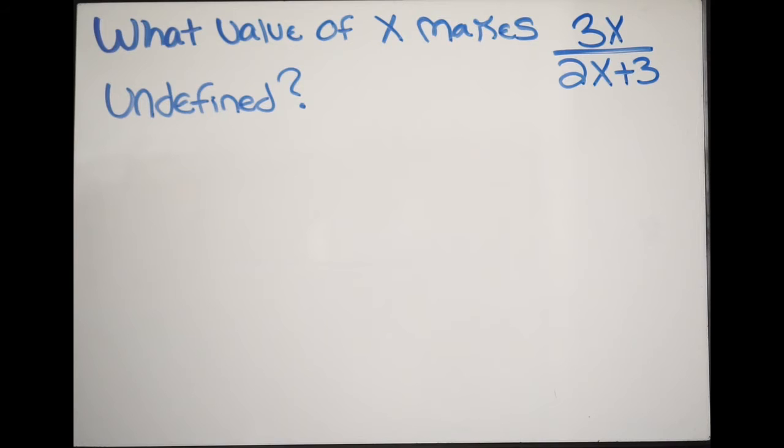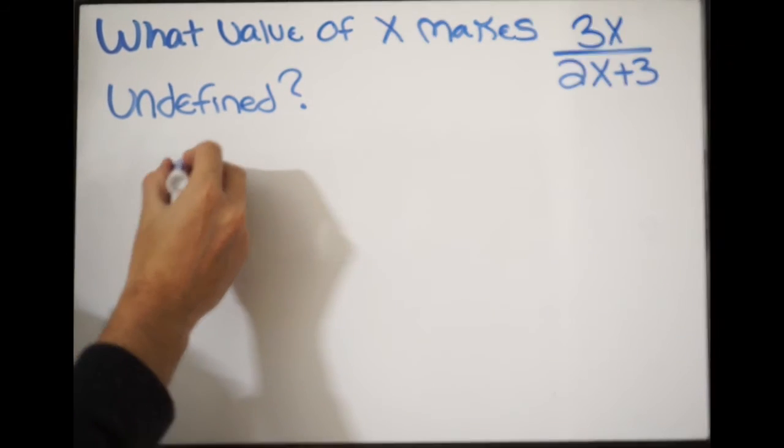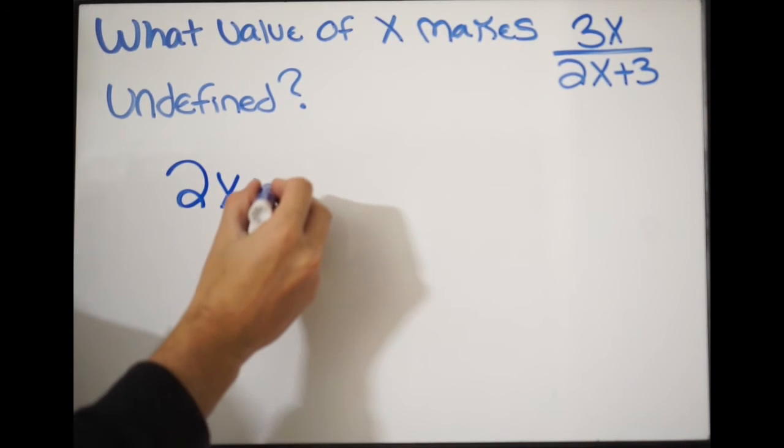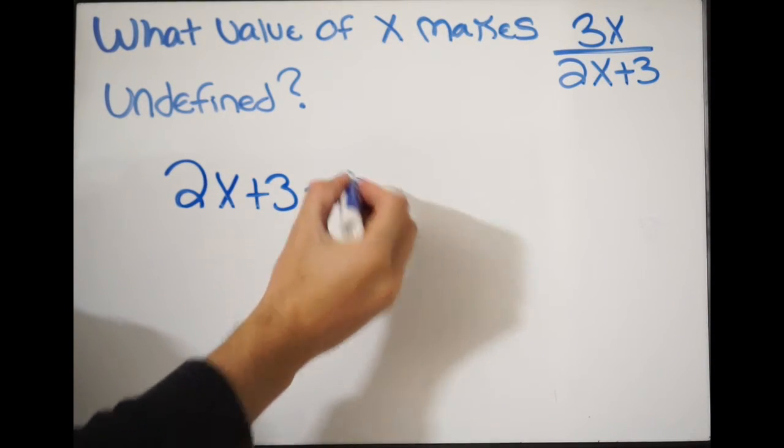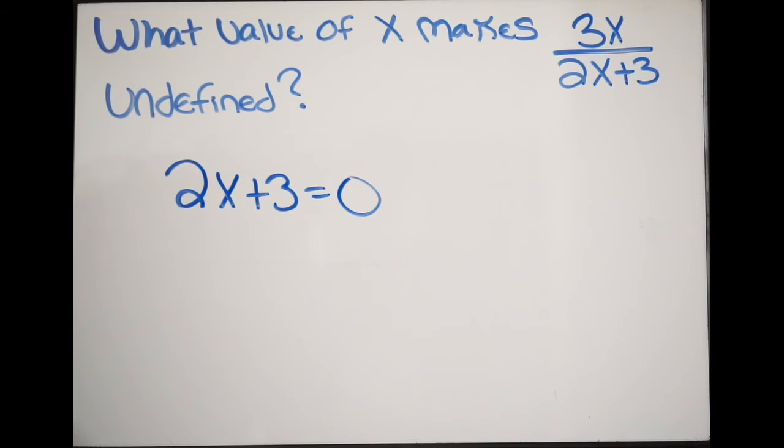In order to figure out what that value of x is going to be, I simply take my denominator, which is 2x plus 3, and I set it equal to zero. All I'm going to do here is solve for x.